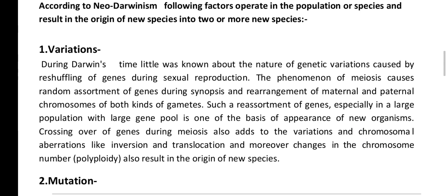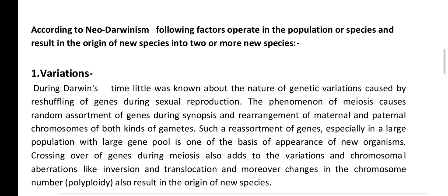The first factor is variations. During Darwin's time, little was known about the nature of genetic variations caused by reshuffling of genes during sexual reproduction. New species arise from random assortment of genes during synapsis and rearrangement of maternal and paternal chromosomes in gametes. Crossing over during meiosis also adds to variation, and chromosomal aberrations like inversion and translocation, as well as changes in chromosome number such as polyploidy, also result in the origin of new species.